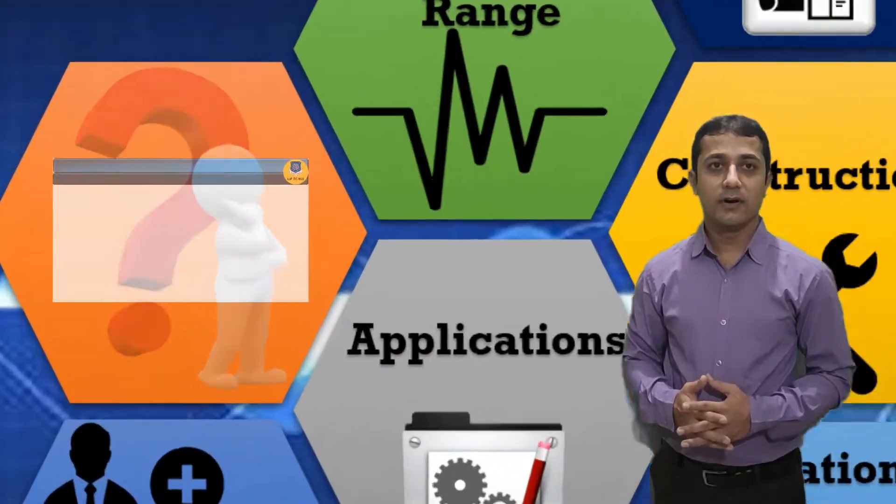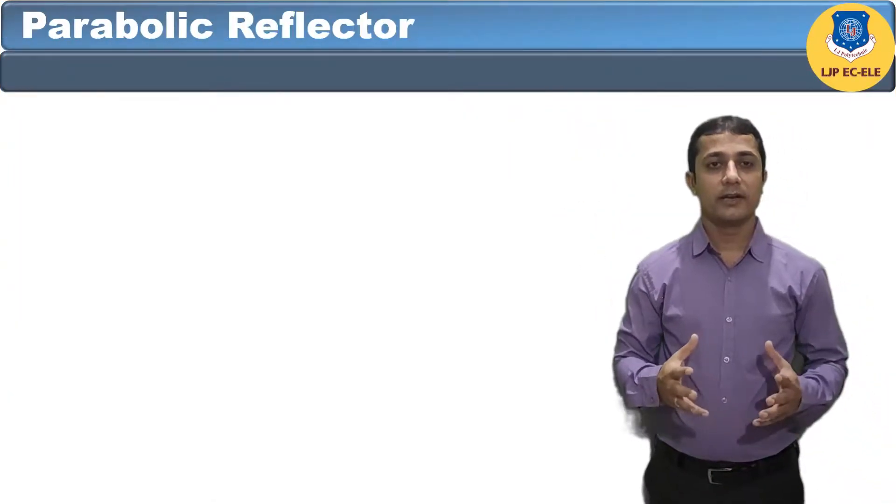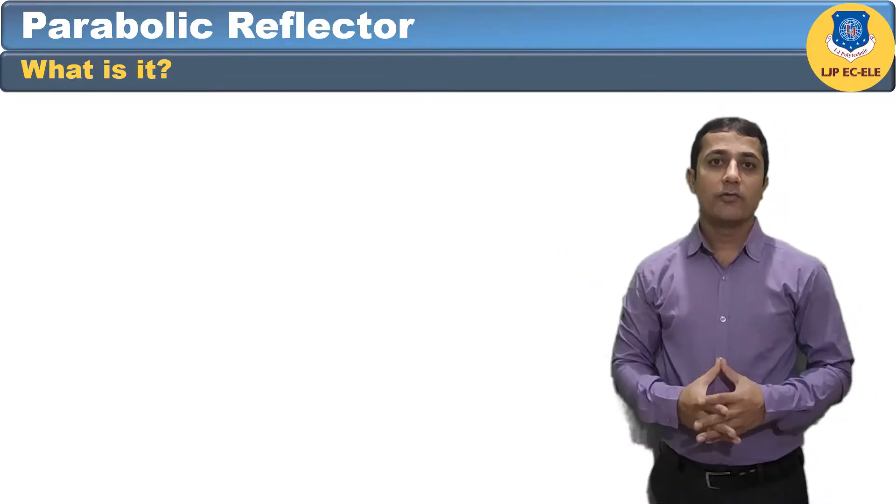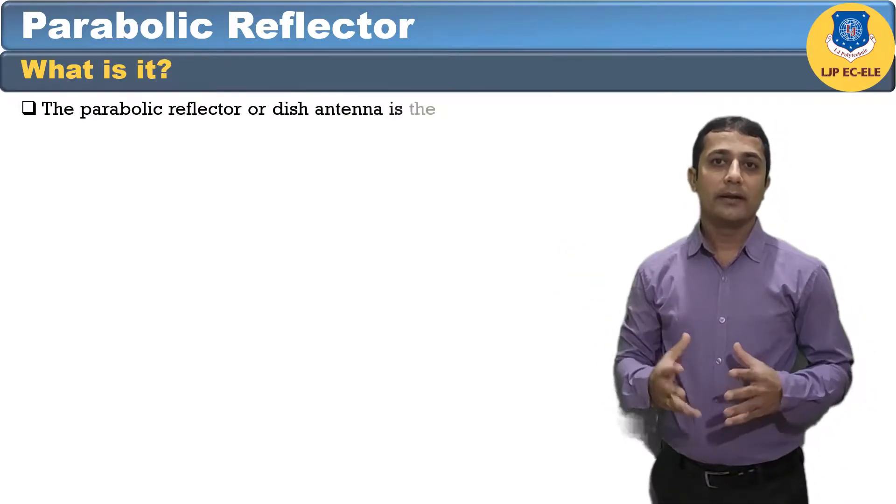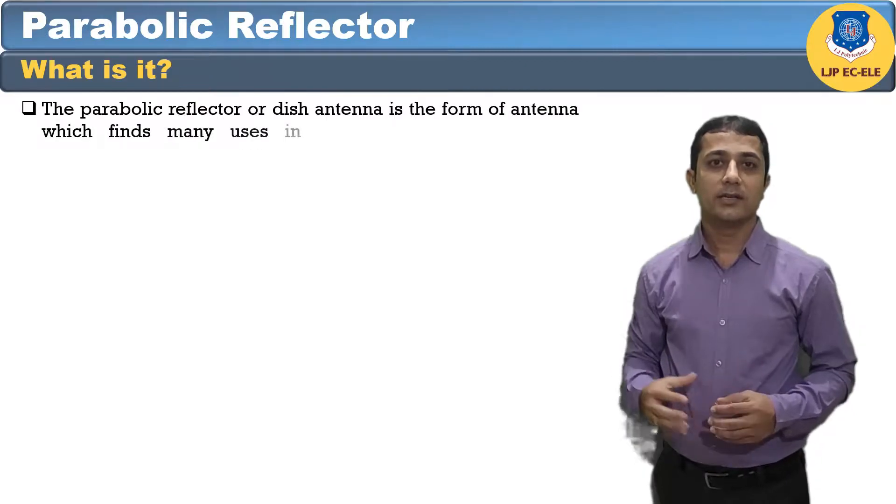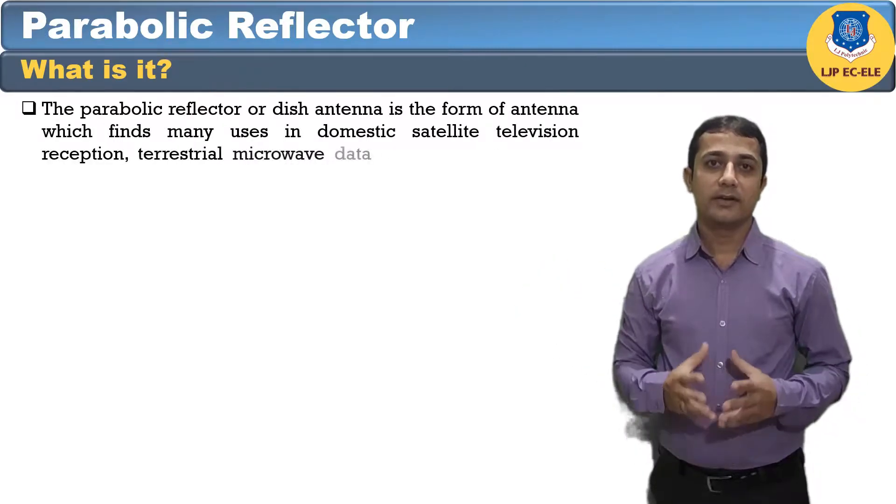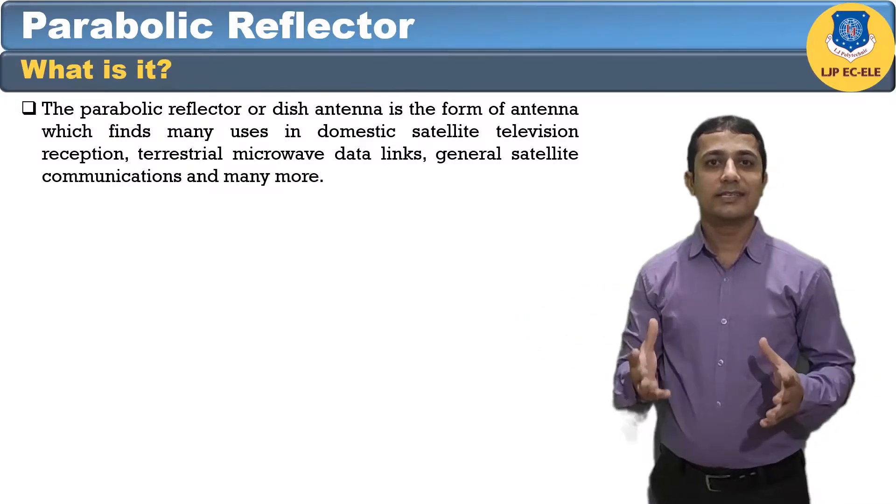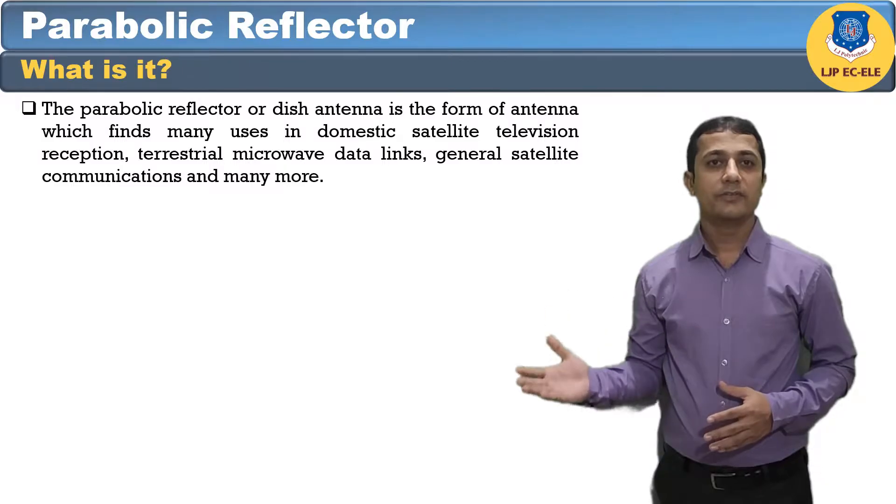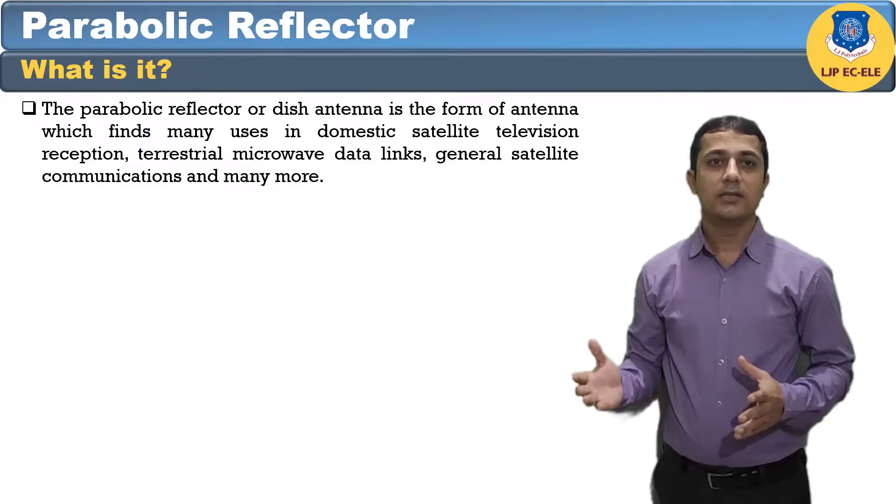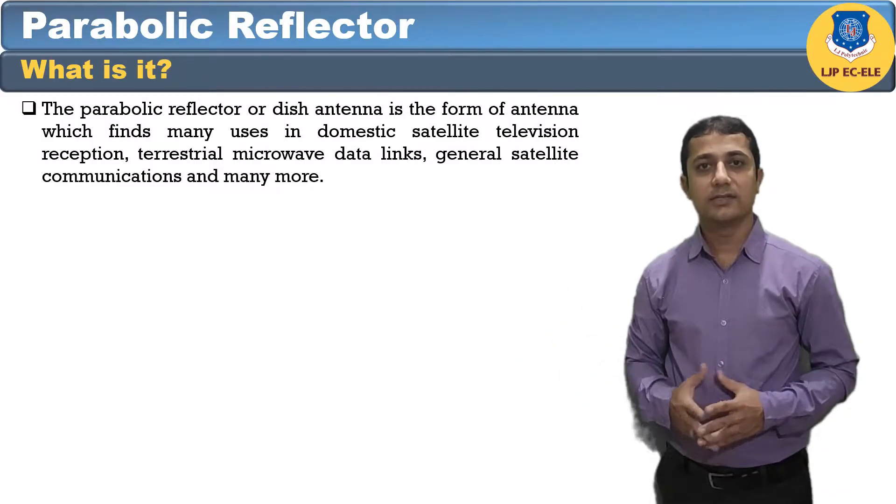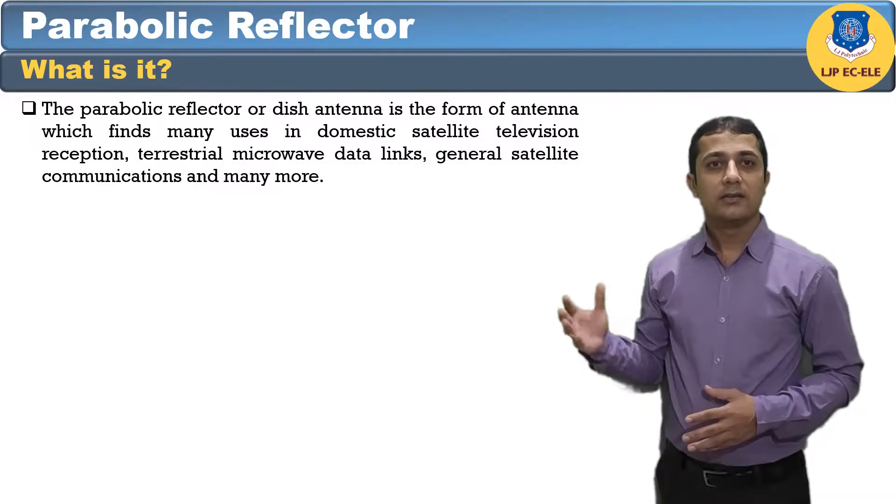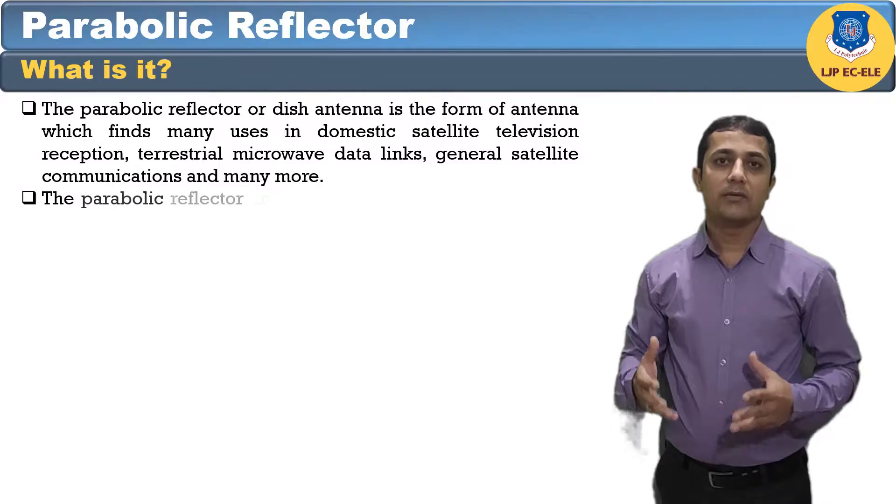First, what is parabolic reflector antenna? Parabolic reflectors are microwave antennas. For better understanding of this antenna, the concept of parabolic reflector has to be discussed. The parabolic reflector antenna finds many uses in domestic satellite television reception, terrestrial microwave data links, general satellite communication and many more.